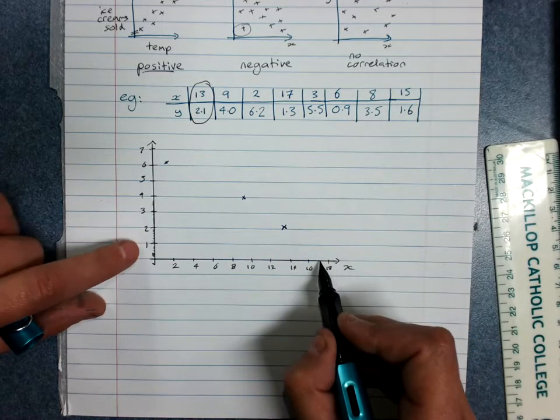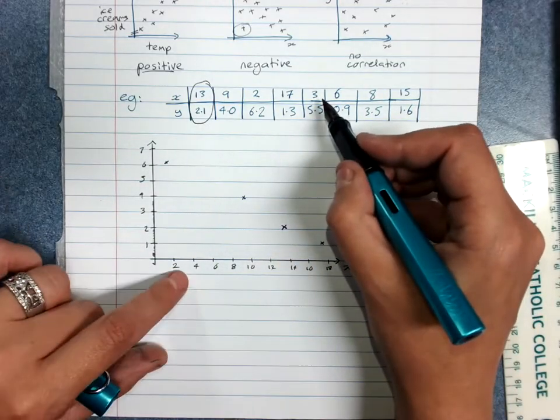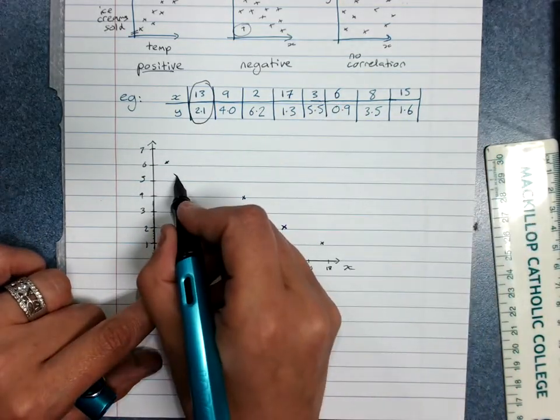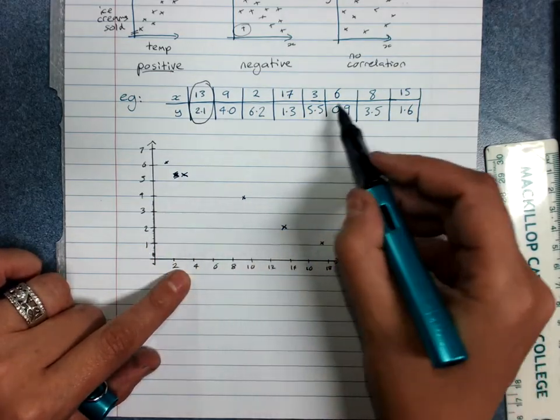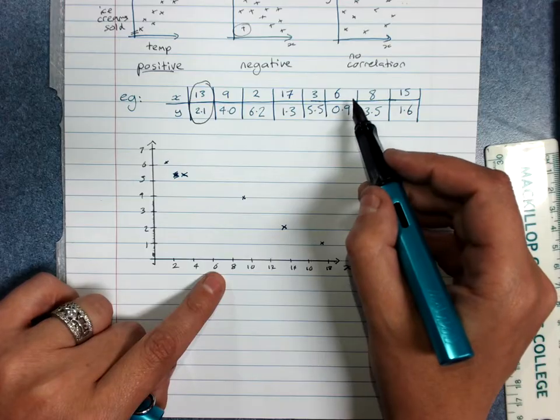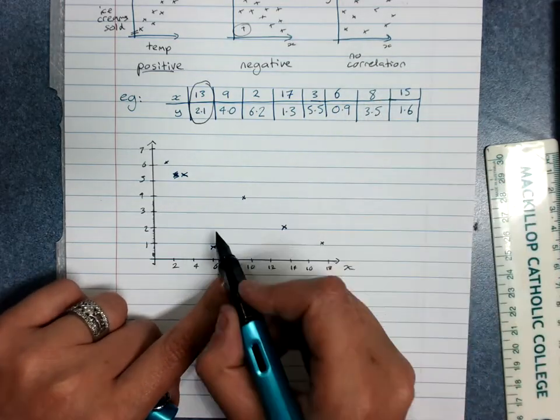17 and 1.3. So you'll be starting to see what looks like a negative correlation here. 3 and 5.5. That was a bit of a mess there. Ignore me. 6 and 0.9. 8 and 3.5.